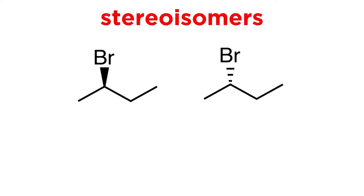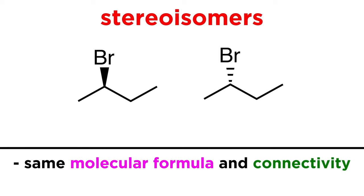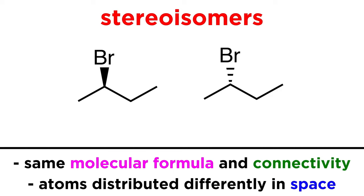But even when molecules have precisely the same connectivity, we can still have stereoisomerism. Stereoisomers are molecules that have the same molecular formula and the same connectivity, but differ in the way the atoms are distributed in space.